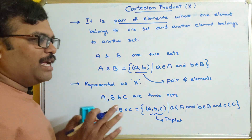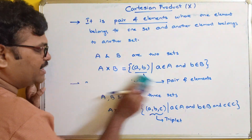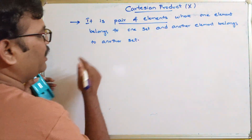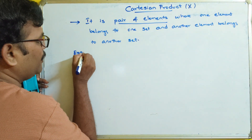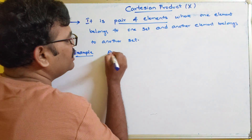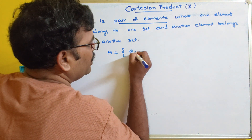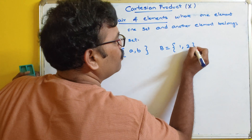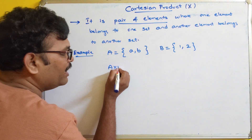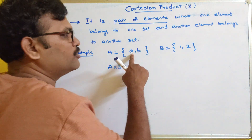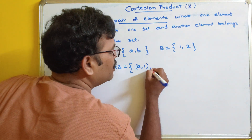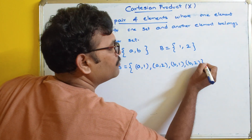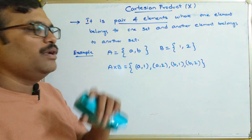Now let us see an example for two sets. Let A = {a, b} and B = {1, 2}. Then the Cartesian product A cross B will be all the pairs: (a,1), (a,2), (b,1), (b,2). This is the Cartesian product for the given sets.